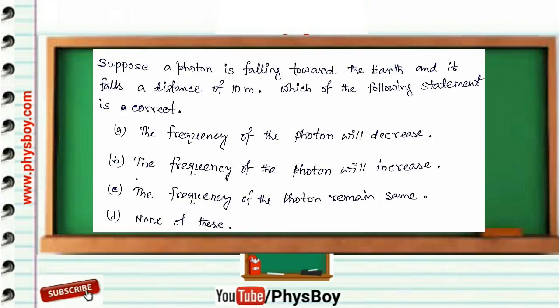The first question: suppose a photon is falling toward the earth and it falls a distance of 10 meters. Which of the following statements is correct? Option A: the frequency of the photon will decrease. Option B: the frequency of the photon will increase. Option C: the frequency of the photon remains the same. Option D: none of these.